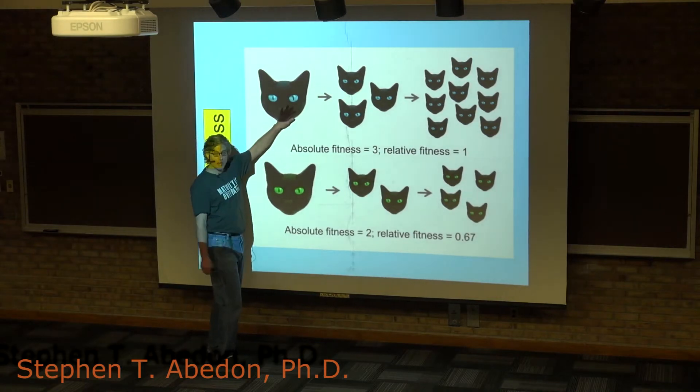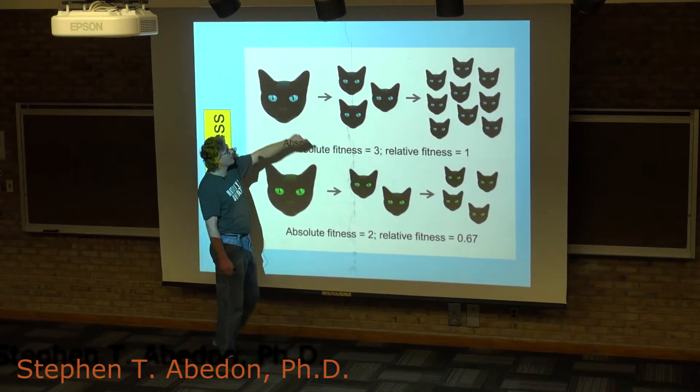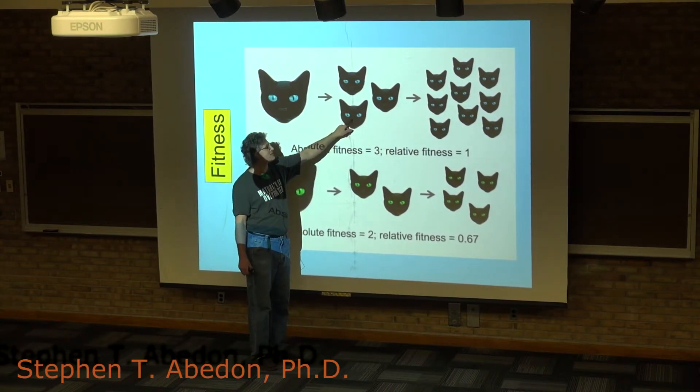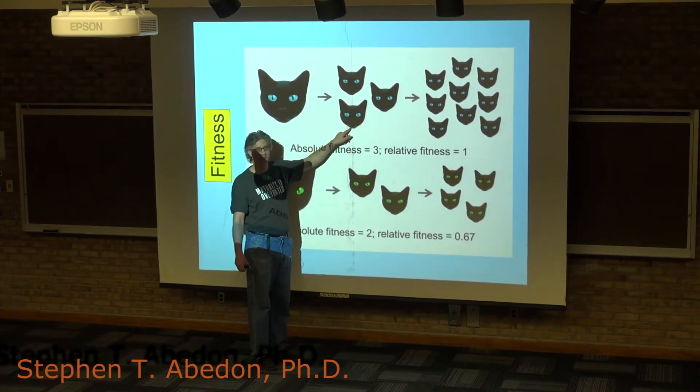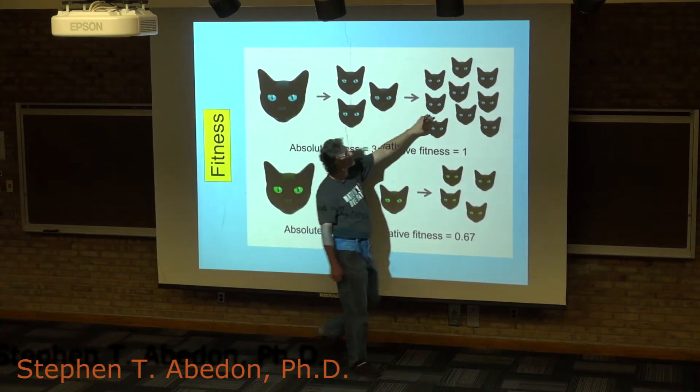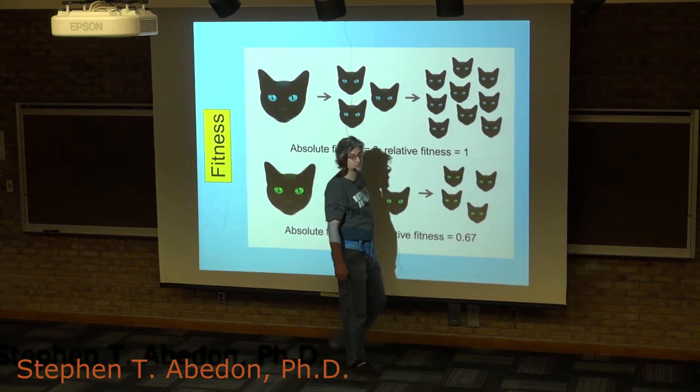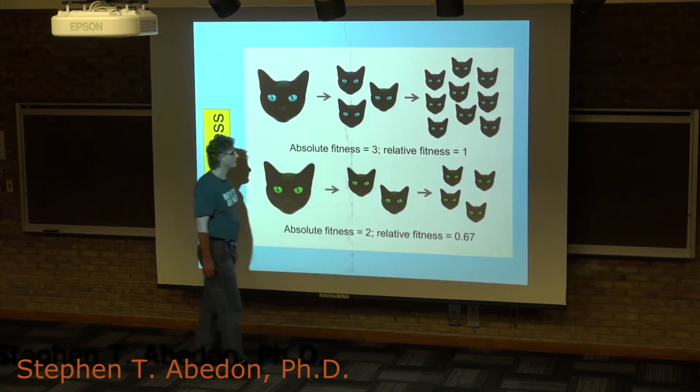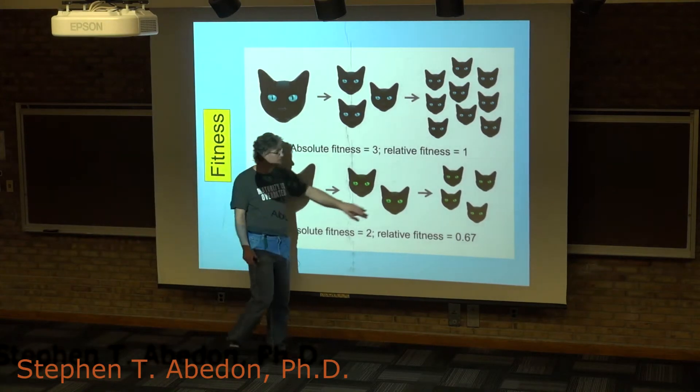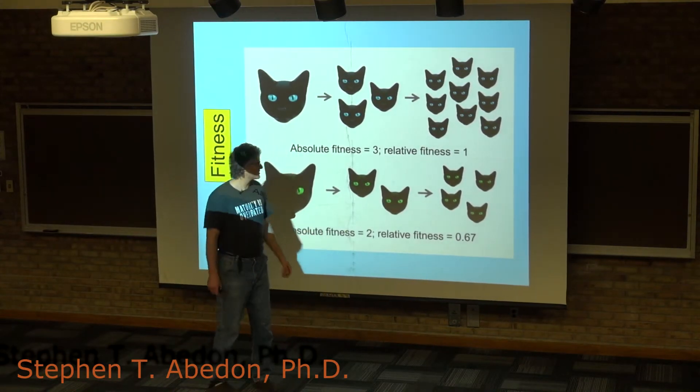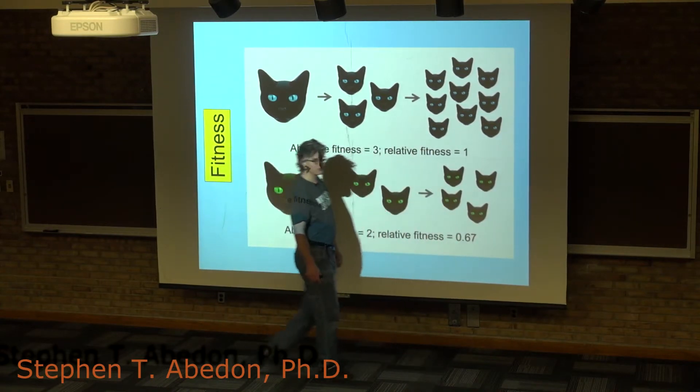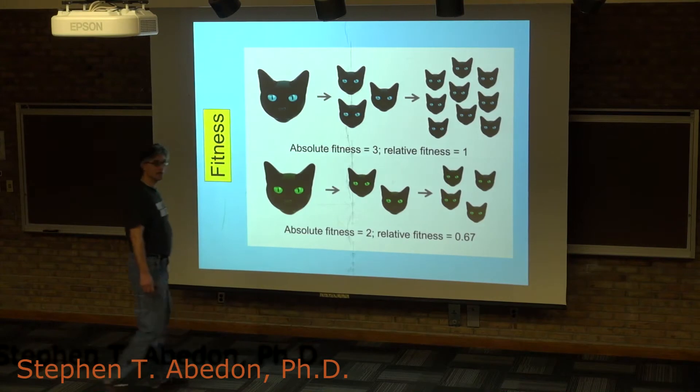So these blue-eyed cats, they on average produce three offspring. I'm saying that these are even cats, right? They're just cats' heads. And if those three individuals then have three individuals in this generation here, we now have nine individuals. Whereas these green-eyed cats are producing only two successful offspring per generation, and so they have only four individuals that are produced after these two generations go by.